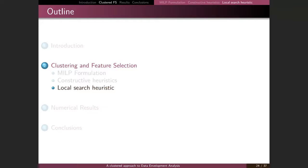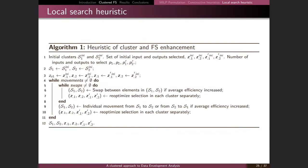After the constructive heuristics, we can apply a local search heuristic in cases where the constructive heuristics don't work properly. In the local search heuristic, once we have found the different clusters, we try to move one DMU from one cluster to another — making either a swap or a single movement — in order to improve the results.